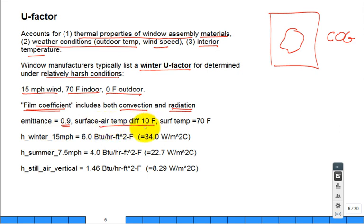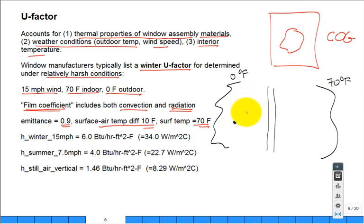It's determined under fairly harsh winter conditions. Not the most severe - 15 mile per hour wind on the outside, 70 degree F indoor air temp, 0 degree F outdoor air temp. What's happening on the inside? It would be like inside this room. What is the convection coefficient? We don't have 15 mile per hour wind in this room. It's pretty much still air but there is some movement, some natural convection.